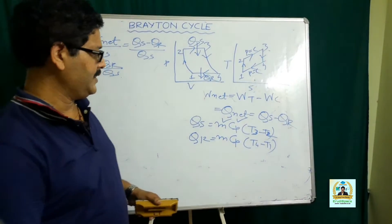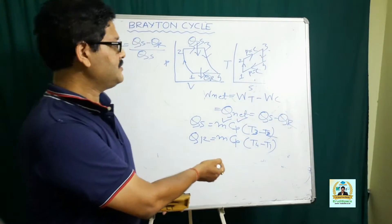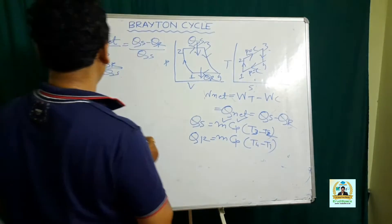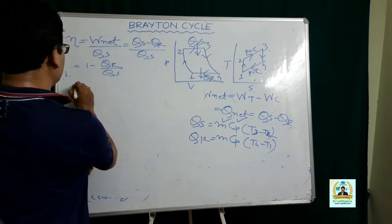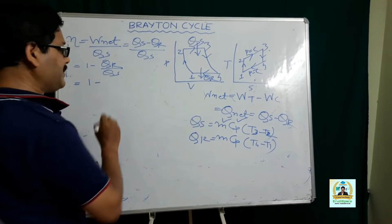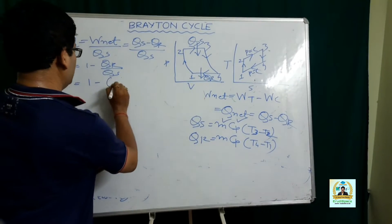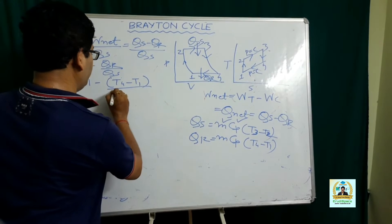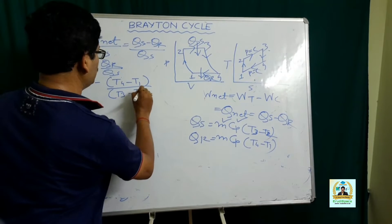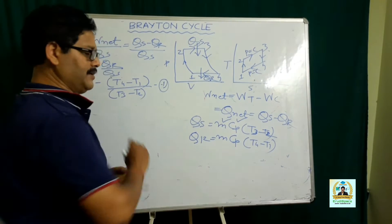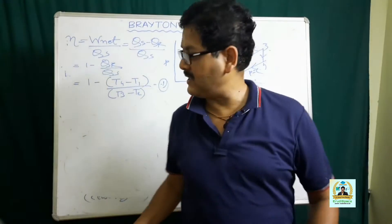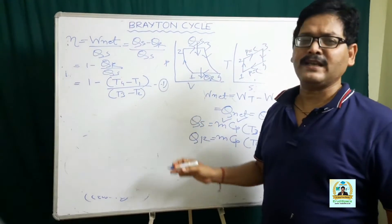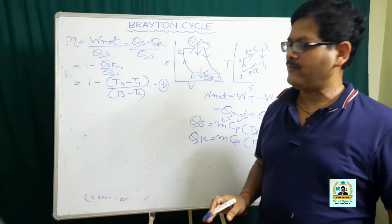If you substitute those values, you get efficiency η = 1 − (T4 − T1)/(T3 − T2). We can call this equation 1. This represents the efficiency of the Joule or Brayton cycle in terms of temperature parameters.